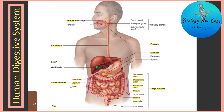Now let's talk about the associated digestive glands present with our alimentary canal. The first is the salivary glands, which has three types: the parotid gland, sublingual gland, and submandibular gland. Our saliva contains an enzyme called salivary amylase, which helps in the digestion of carbohydrates. So partial digestion of food occurs here.